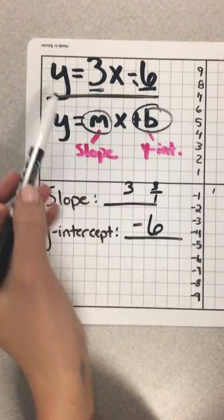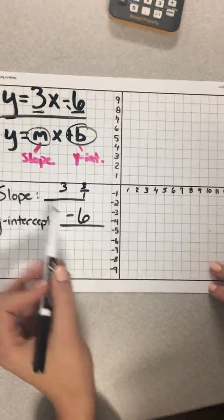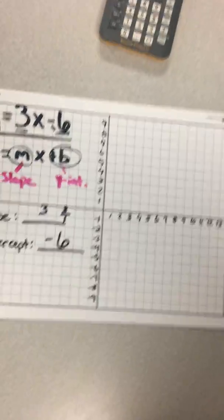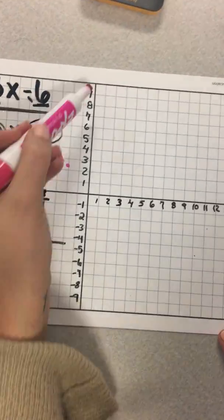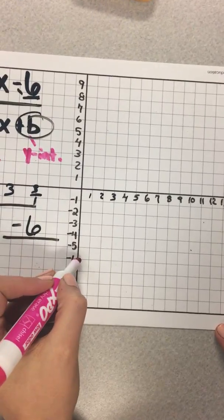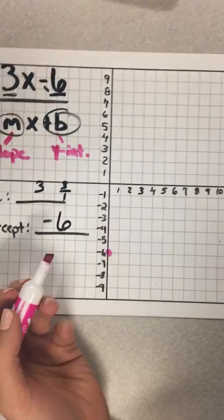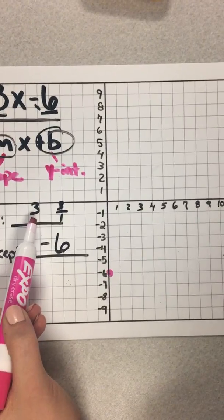So now we need to graph this equation, and we can do that because we have a y-intercept and a slope. So how we're going to graph it is we're going to start with our y-intercept, which is negative 6. So on my y-axis, I'm going to go down to negative 6.